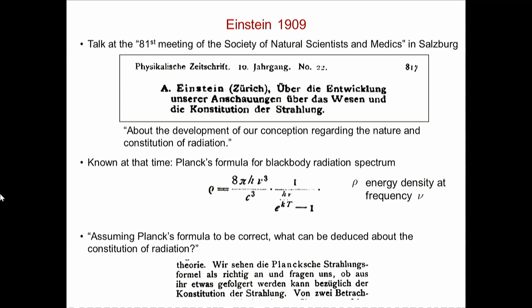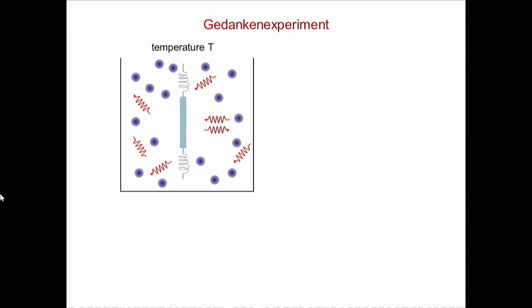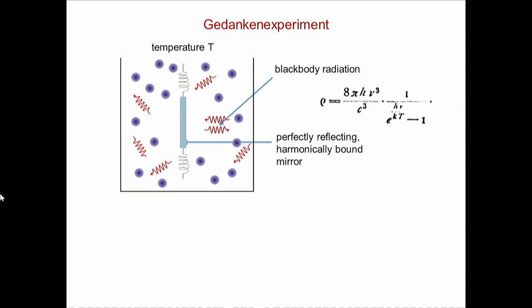So Einstein wanted to build on this foundation and know more about the nature of radiation. He said, assuming Planck's formula to be correct, what can we deduce about the constitution of radiation? And what he did is a gedanken experiment, as usual. So he imagined a box of temperature T filled with a gas of photons - radiation - in thermal equilibrium with temperature T, described by Planck's law. So this is black-body radiation at temperature T. Now he imagines a perfectly reflecting mirror hung there, which is free to move, maybe oscillating.